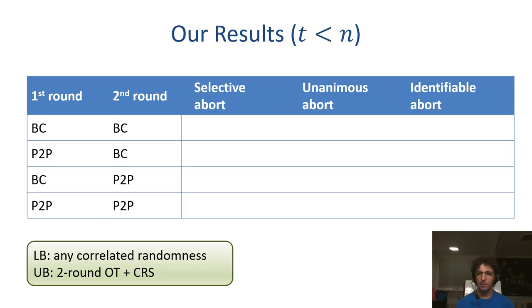We are now ready to state the main result of this work. We give a complete characterization of the trade-off between the usage of broadcast by the protocol and the achievable security guarantees. All of the lower bounds we show hold facing any correlated randomness given to the parties, and all of the upper bounds hold against any number of corrupted parties and rely on the optimal assumption of two-round oblivious transfer.